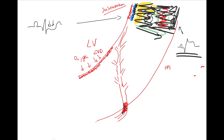In Prinzmetal's angina — seen in young women with massive coronary spasms — the spasms are so intense that they constrict even the vessels supplying the epicardium. For a moment, ischemia strikes the entire myocardial wall simultaneously. It doesn't progress gradually from endocardium to epicardium; the entire coronary artery contracts at once, ischemia hits all layers together, and that's why we see a temporary ST elevation.